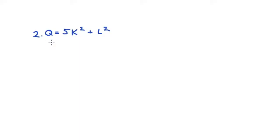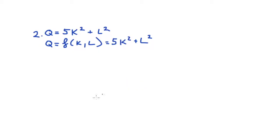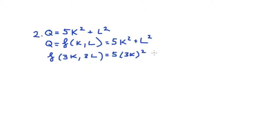Q is equal to five times K squared plus L squared. Again, it's best to rewrite with the functional notation, so I get Q is a function of capital and labor, which is equal to five times K squared plus L squared. Let's change all of our inputs by some factor — let's make it three — so that we evaluate our function with three times the level of capital and three times the level of labor. This gives us five times three K all squared plus three times L all squared.